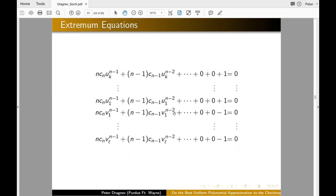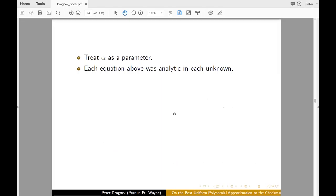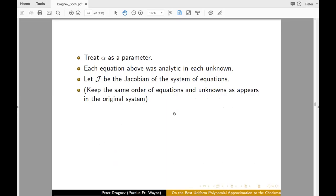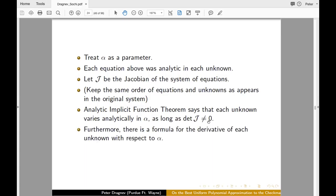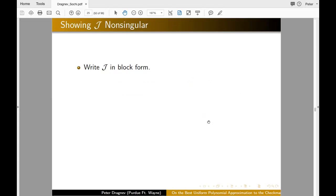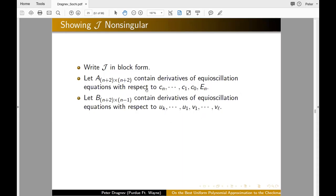And of course, you can see the values of the polynomial. They depend on the coefficients C's and on the nodes U's and V's. And then there is also the derivatives. These U's and V's are local minimum or maximum. So the derivatives will have to be zero. That's your extremum equations. And when we treat alpha as a parameter, each equation is analytic. The J is the Jacobian of the system. We will study it. So keep in the same order. The analytic function, implicit function theorem says that as long as the Jacobian determinant is not zero, we will have differentiability. And there is the formula for that derivative.